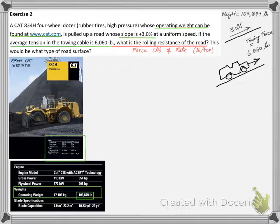We are interested in the rolling resistance rate in pounds per ton, but we need to calculate first the absolute rolling resistance force.